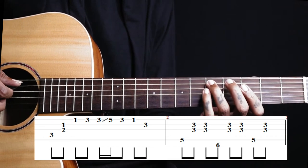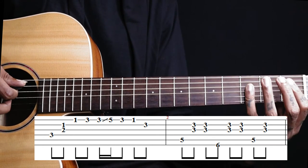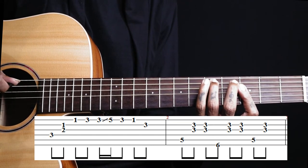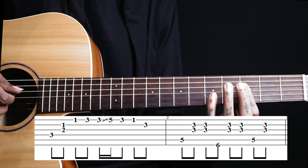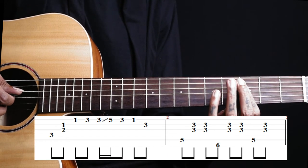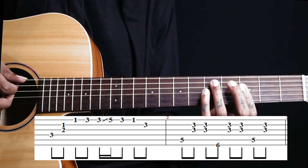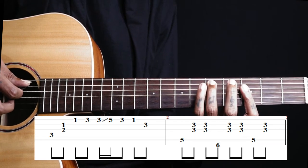Then we have this Bb chord with D as bass. So I'm barring 3rd fret on the 4th string, 3rd fret on the 3rd string and 3rd fret on the 2nd string and 5th fret on the 5th string.